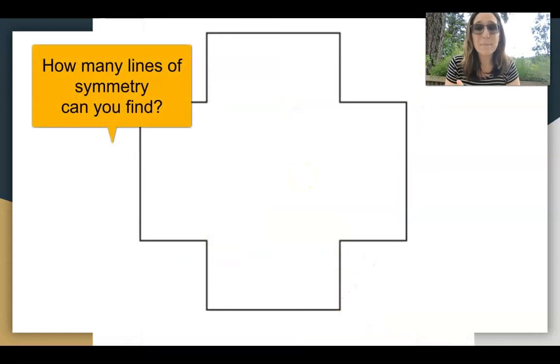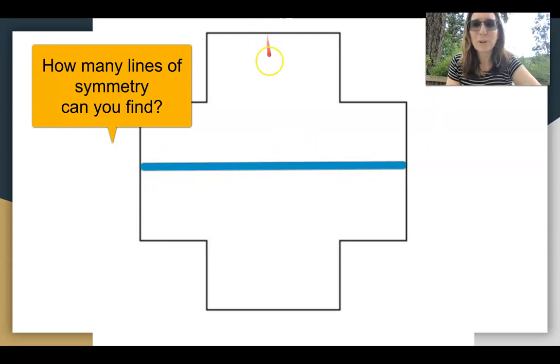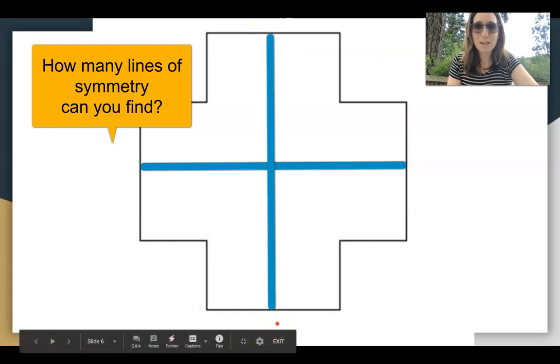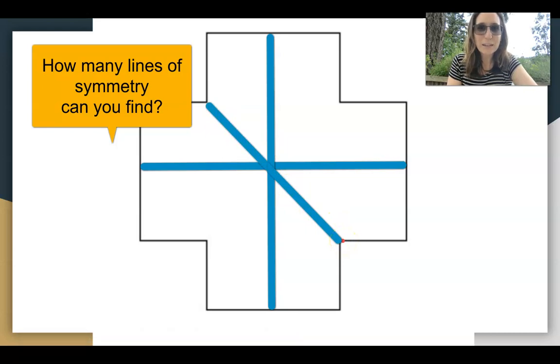Some polygons have more than one line of symmetry. If we folded this across here, good, there's one line of symmetry. We can fold it across vertically, there's two lines of symmetry. We can fold it in half diagonally, there's another line of symmetry. And one more way, we can fold it in half this way. So there's four lines of symmetry in this complex shape right here.